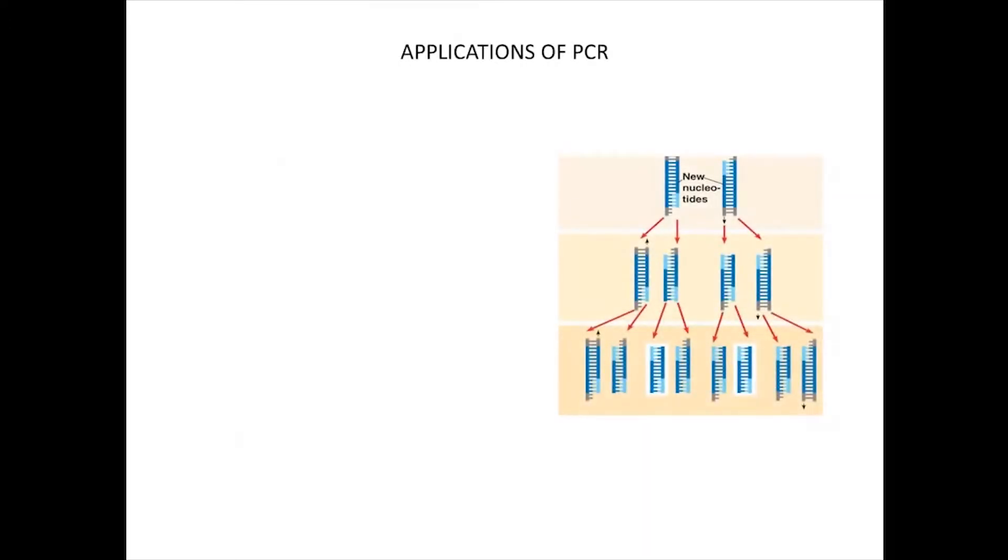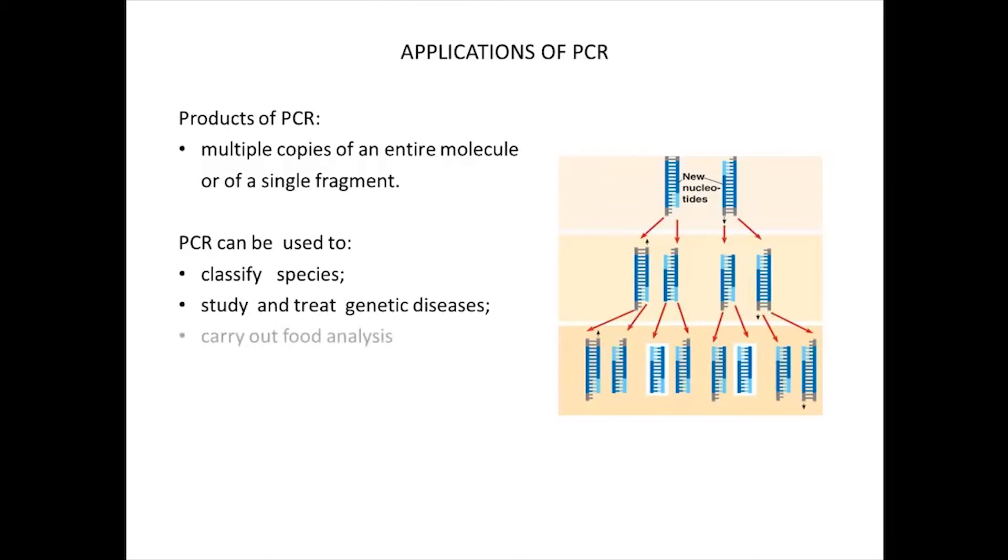Scientists can replicate an entire molecule of DNA or a single fragment, producing multiple copies of the original sequence of interest. There are many different applications for PCR. It can be used to classify species, study genetic diseases, carry out food analysis or perform DNA tests in forensic science, like DNA fingerprinting or profiling.